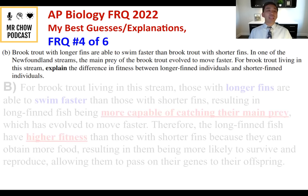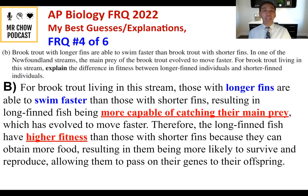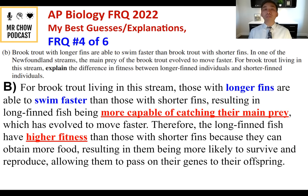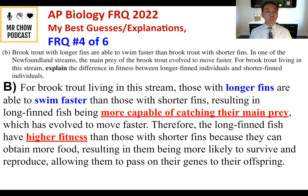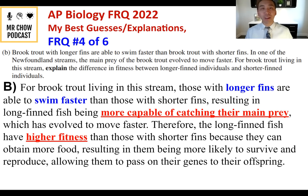Question 4B: Brook trout with longer fins swim faster. In one stream, prey evolved to move faster. Explain the fitness difference. For brook trout in that stream, those with longer fins are more capable of catching prey that has evolved to move faster. Therefore, long-finned fish have higher fitness than short-finned fish because they can obtain more food, making them more likely to survive, reproduce, and pass on their genes to offspring.